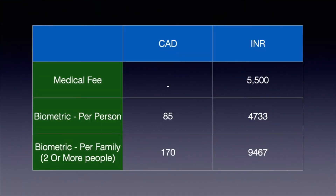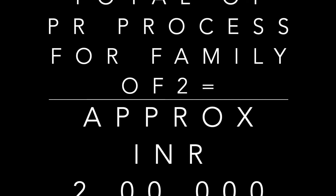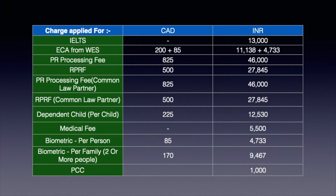Once you get your invitation, you will have to go for a medical examination in India. For the medical examination you will have to pay around 5,500 rupees, though it can vary based on where you live. Along with the medical fee, you need to pay for biometrics as well, which is 85 Canadian dollars per person, equal to 4,733 Indian rupees. For a family of two or more it will cost 170 Canadian dollars, equal to 9,467 Indian rupees. You will also have to pay for your PCC — Police Clearance Certificate — which is around 1,000 rupees. If you have lived somewhere outside India for more than six months, you will need to get a PCC from that country as well.